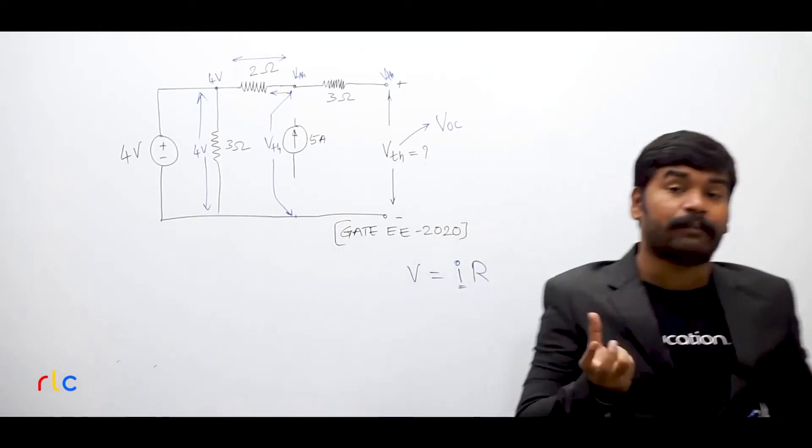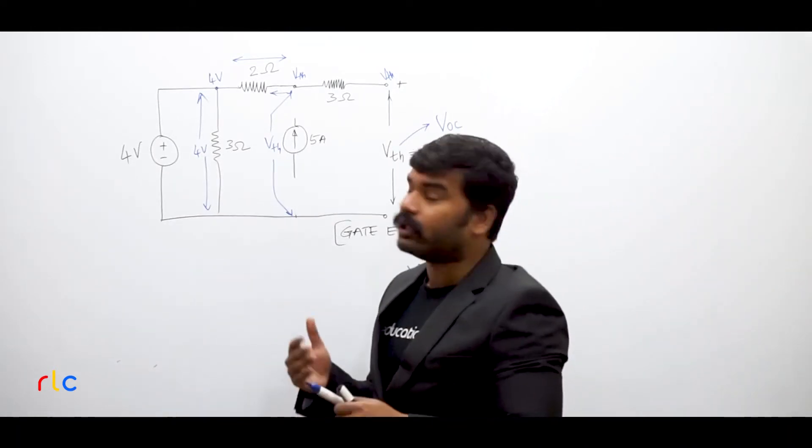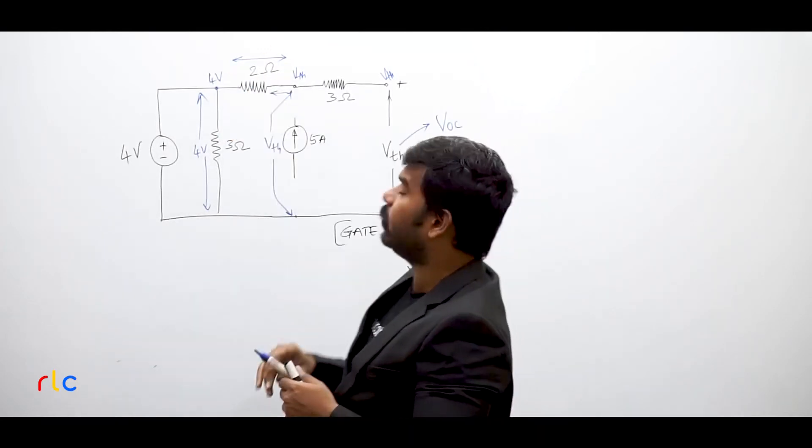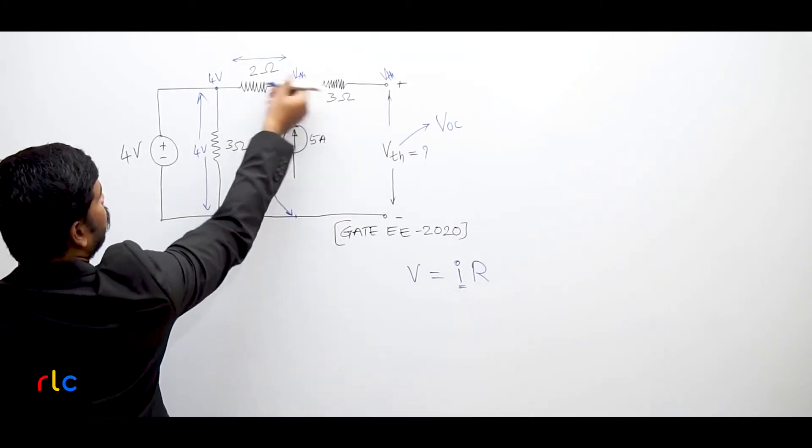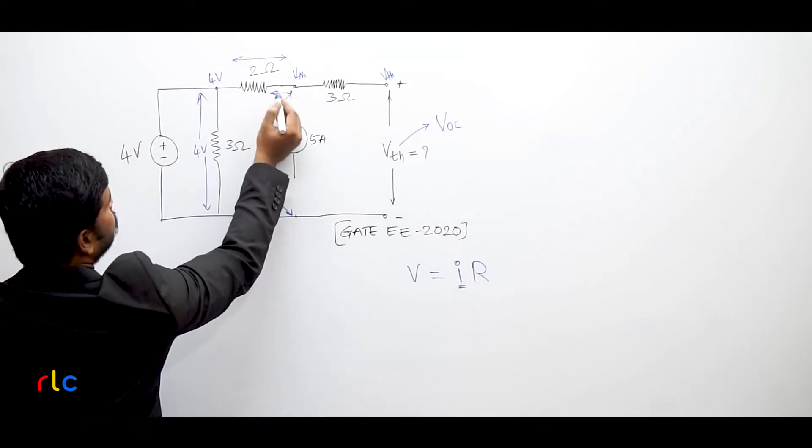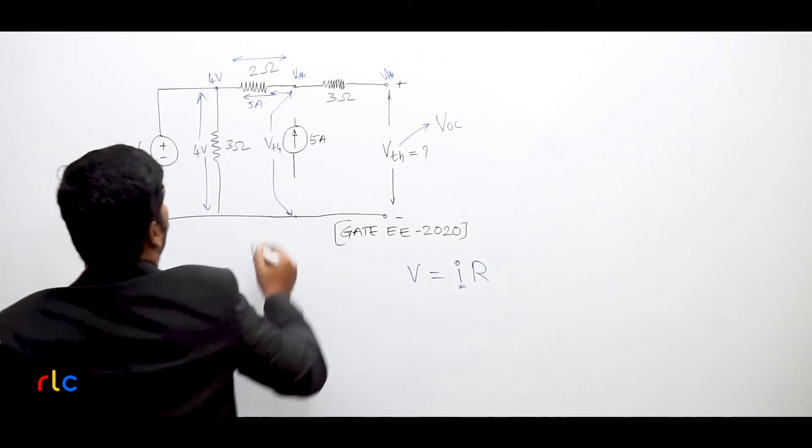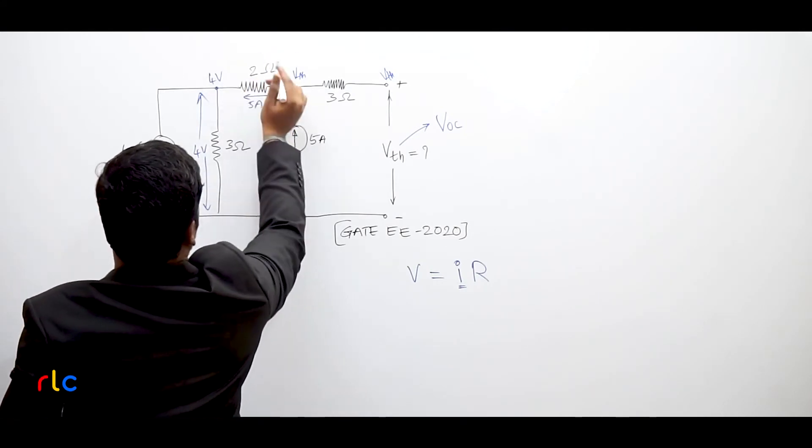Now the question is about polarities. So what can be the correct polarities? What we told is right. Here we are having some voltage drop. As I already told you, this 5 amp source current will circulate only towards the 2 Ohms resistor. If 5 amperes of current is flowing through 2 Ohms, what would be the voltage drop across it? The voltage dropping across it would be 10 volts.